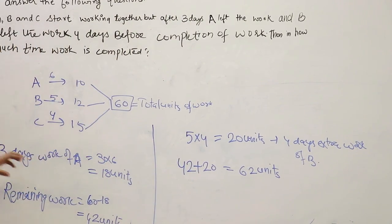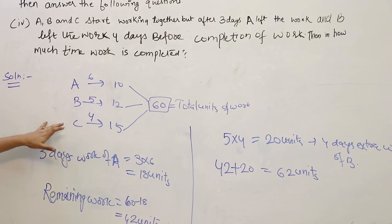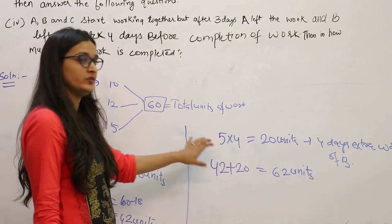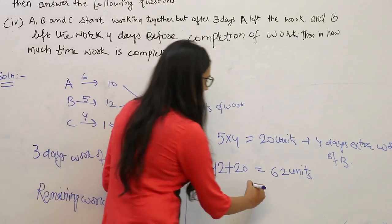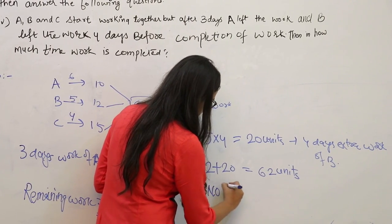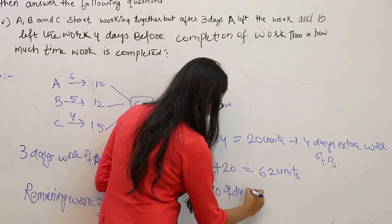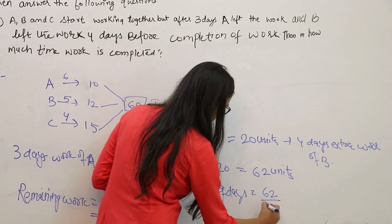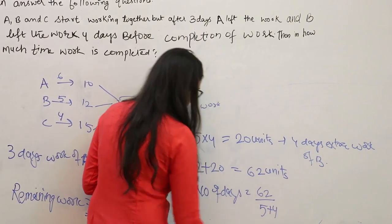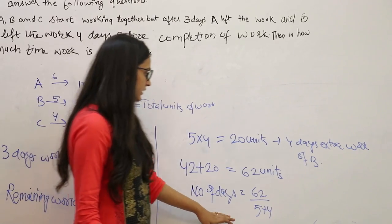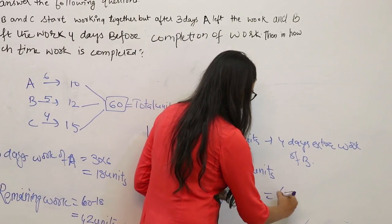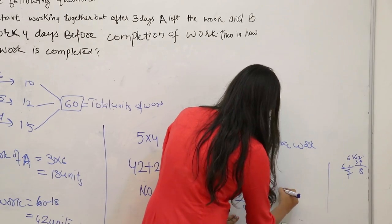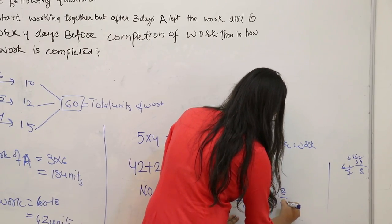This 62 units of work is done by B and C. Divide this 62 units of work with the efficiency of B and C. That will give you the number of days in which the work is completed, which is 6 and 8/9 days.